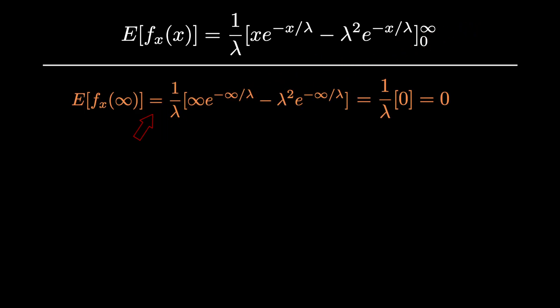Plugging infinity into x, we get infinity times e to the negative infinity over lambda minus lambda squared e to the negative infinity over lambda.